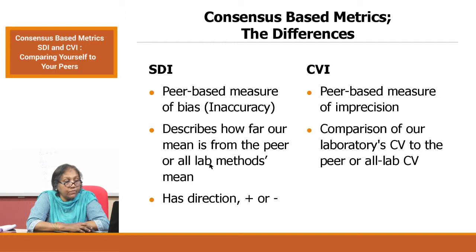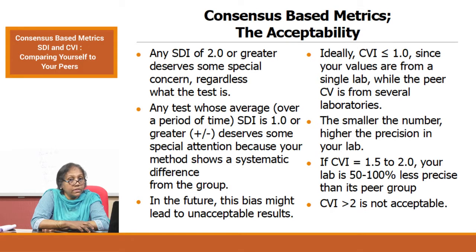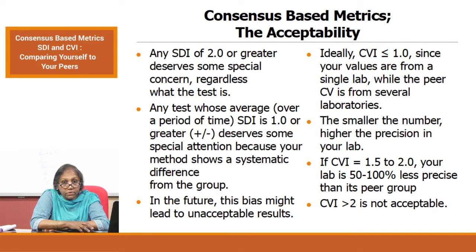SDI describes how far your mean is from the peer or all-labs mean; CVI compares your lab's CV to all peer labs' CV. SDI has direction — plus or minus — and any SDI of 2 or greater deserves special concern regardless of the test. Any test whose average SDI is 1 or greater in one direction over time deserves attention, as it shows a systematic difference from the group and may lead to unacceptable results. CVI should ideally be less than 1; CVI of 1.5 to 2 means 50 to 100 percent less precise than peers, and CVI more than 2 is not acceptable.